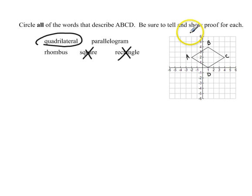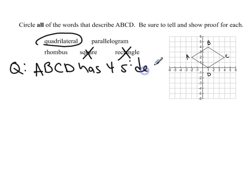Now we need to go about showing proof for each of these things. To prove that it's a quadrilateral, all we have to say is ABCD has four sides. And then we want to say therefore, and we can do it with these three dots, it is a quadrilateral.